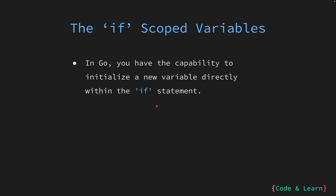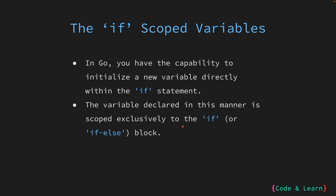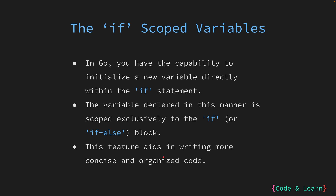In Go, you can create and initialize a new variable right within the if statement itself. This means you can declare a variable and assign it a value at the same time you are performing the conditional check. When you declare a variable this way, its scope is limited to the block of code enclosed by the if statement — the variable is only accessible within that specific block and won't be visible outside it. This Go feature enables you to write more concise and organized code, keeping the scope of variables localized to where they are actually needed, leading to clearer and more maintainable code. Let's now look at an example.